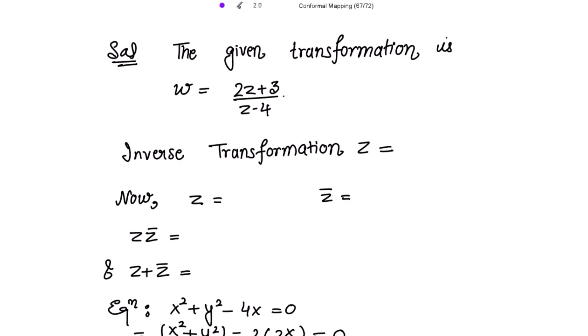The given transformation is given to us, and to get the inverse transformation we just need to write z in terms of w. From here, writing z = (4w + 3)/(w - 2).